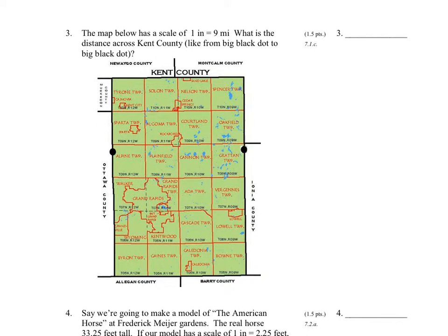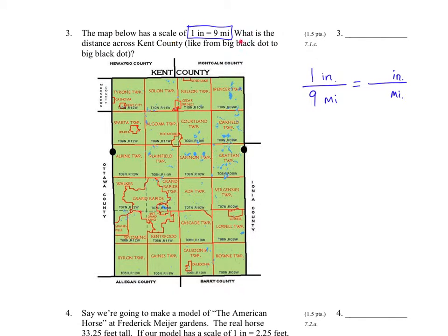Number three: the scale on the map below is one inch equals nine miles. Whenever you see a scale given to you, the first step — even before reading the rest of the question — is to put it in as your first fraction. So I have one inch over nine miles, and that tells me the second fraction's numerator has to be in inches and the denominator in miles. Now the question asks: what is the distance across Kent County, from the Ottawa County line to the Ionia County line?